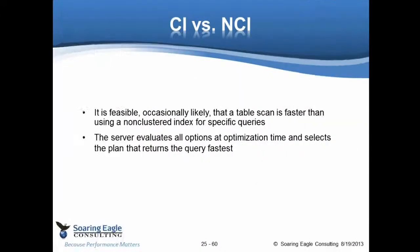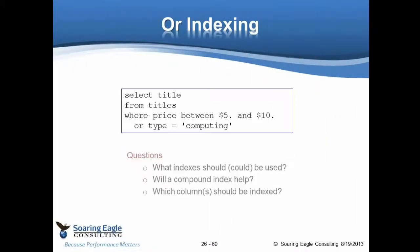Sorry, I went past this one. I warned you about the new clicking. It is feasible, occasionally likely, that a table scan is faster than the non-clustered index. This is based on calculations the server performs at optimization time.